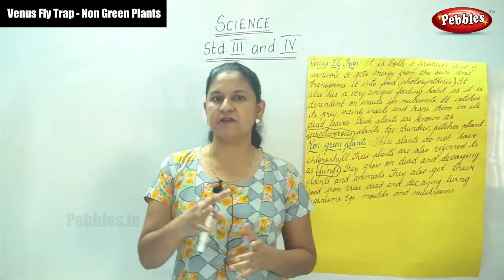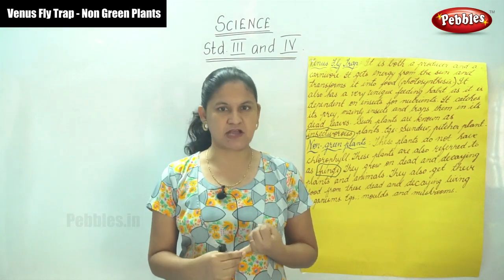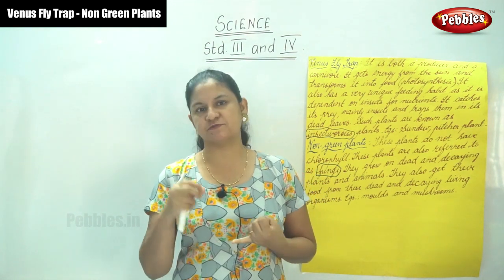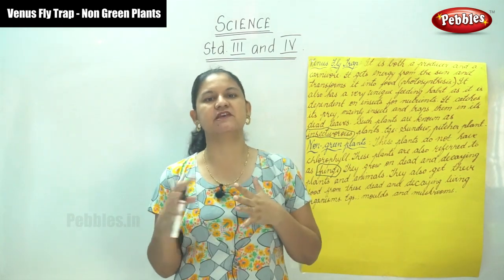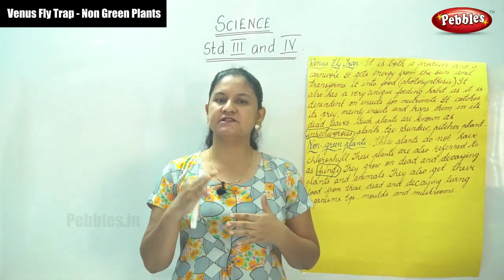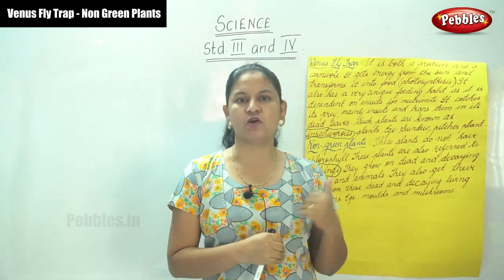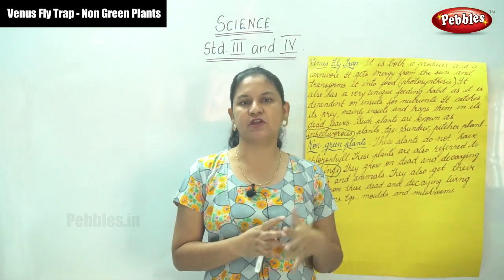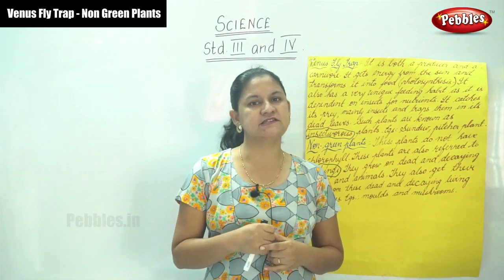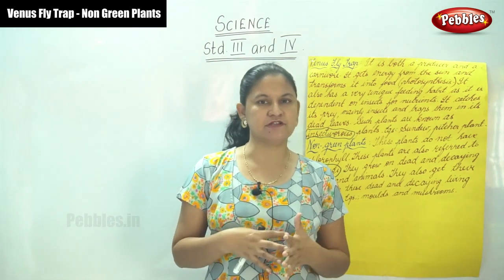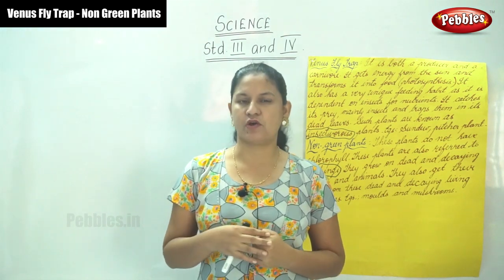So these are the three different types of amazingly different plants. First is the cactus, also referred to as a desert plant, which has spines instead of leaves. Next is the Venus flytrap, which is both a producer and a carnivore and depends on insects for its nutrients. And finally, non-green plants, which lack chlorophyll and grow on dead and decaying plants and animals, getting their food from these organisms.